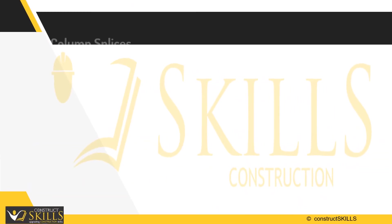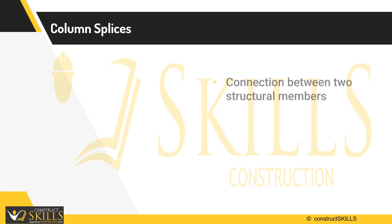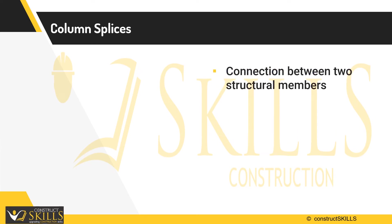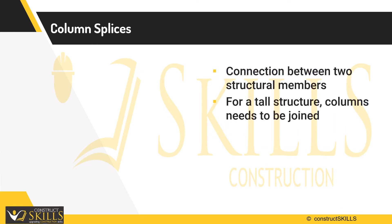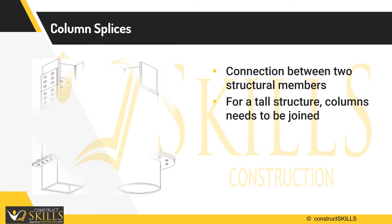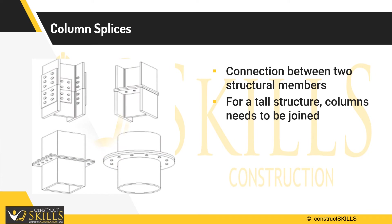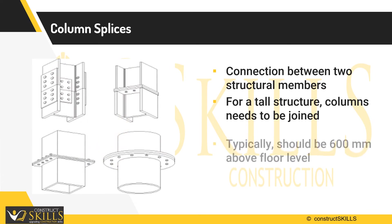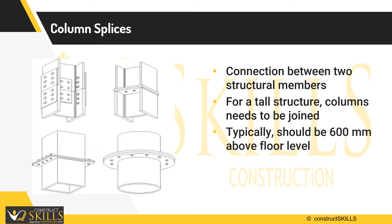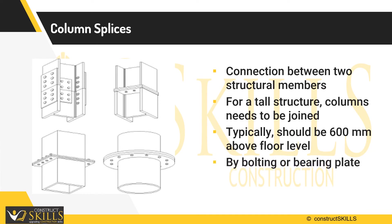Column splices are connections between two structural members. For a tall structure, columns need to be joined. Typically it should be 600 mm above floor level. It can be done by bolting or bearing plate.